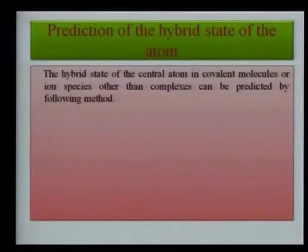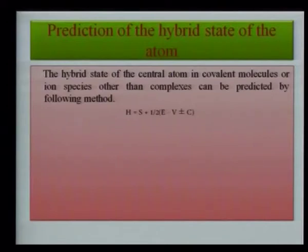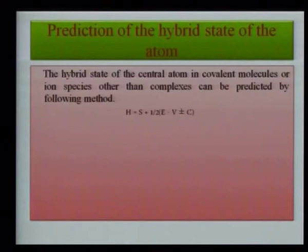To predict the hybrid state of the central atom, we use the formula: H = S + ½(E − V) ± C, where H is the hybridization number, S is the number of surrounding atoms, E is the number of valence electrons, V is the number of monovalent ions, and C is the charge on the molecule. If the charge is negative we add; if positive we subtract.